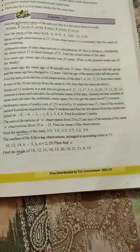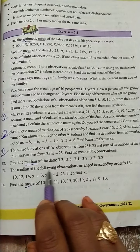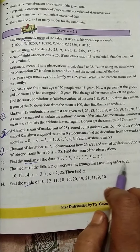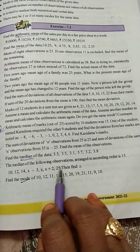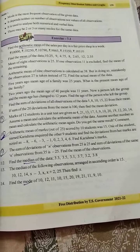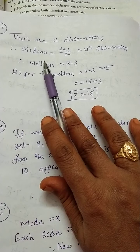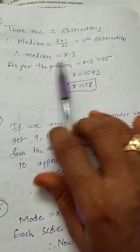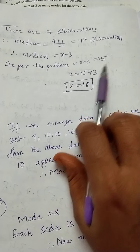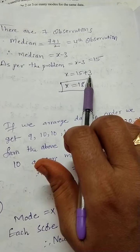Next, Question 13: The median of the following observations arranged in ascending order is 15. The data is: 10, 12, 14, x-3, x, x+2, 25. Find x value. There are seven observations. Median equals (7+1)/2, that is the fourth observation. Median equals x-3. As per the problem, x-3 equals 15. Transposing, x equals 15+3, so x equals 18.